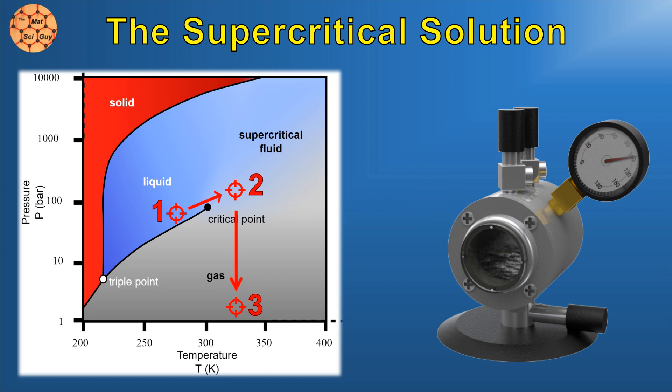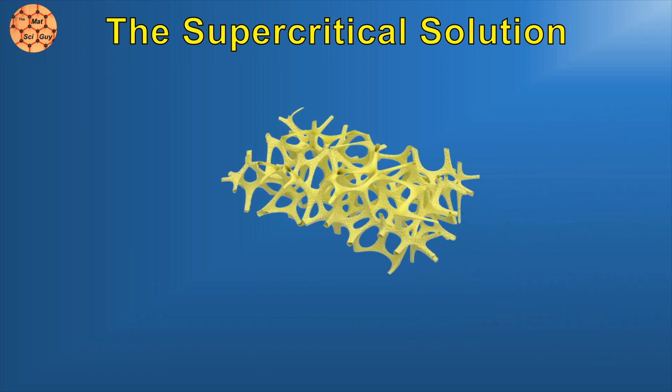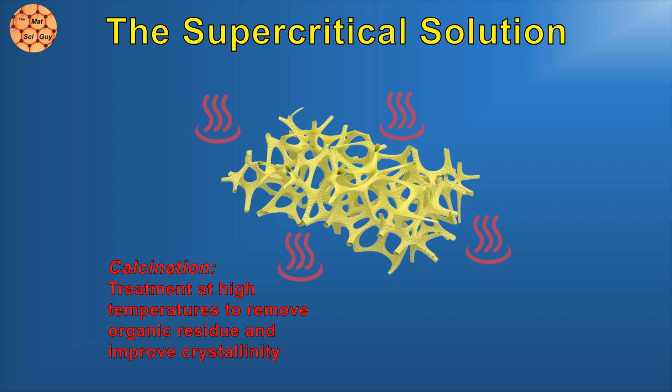With just a few unconventional moves along a phase diagram, we have removed our liquid without ever crossing the liquid-gas boundary. The gel can then be calcined to make it crystalline and more mechanically robust.